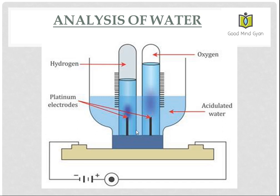Now you have two electrodes. This is the negative electrode and this is the positive electrode. So hydrogen gas gets collected at the negative electrode and oxygen gas gets collected on the positive electrode.